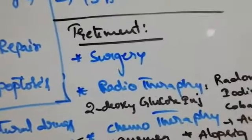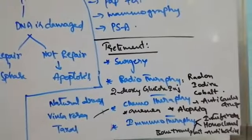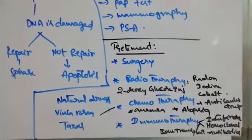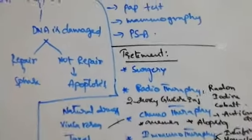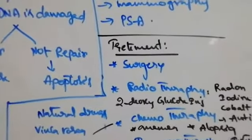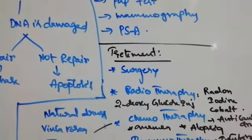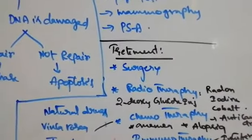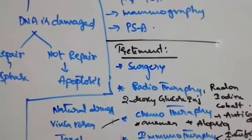Treatment. Surgery removes the tumor. Radiotherapy: by using radon or cobalt, radiation is given to the cells. Before radiation, they inject 2-deoxy glucose at the particular tumor site. Because tumor cells absorb this glucose more readily and respond to radiotherapy effectively.